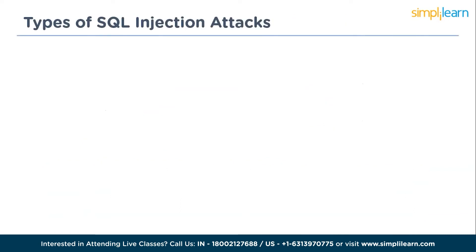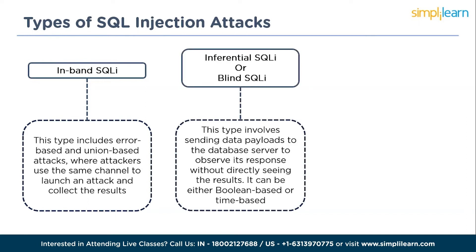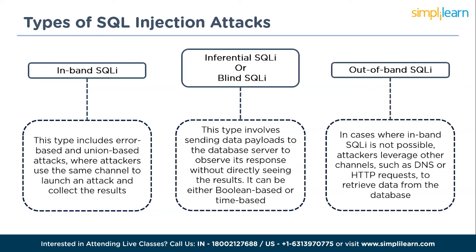There are different types of SQL injection attacks. The first is in-band SQL injection, which includes error-based and union-based attacks, where attackers use the same channel to launch an attack and collect results. The next is inferential SQL injection, also known as blind SQL injection, which involves sending data payloads to observe the server's response without directly seeing results — it can be boolean-based or time-based. Finally, out-of-band SQL injection leverages other channels such as DNS or HTTP requests to retrieve data when in-band injection is not possible.